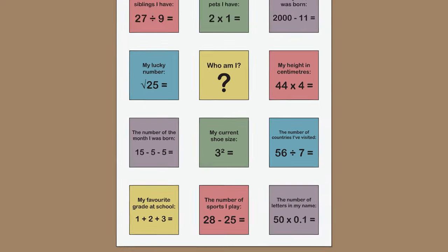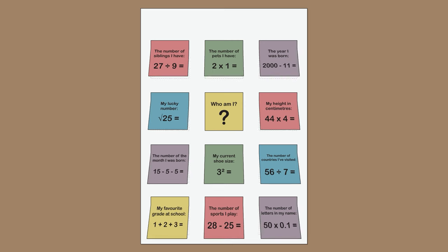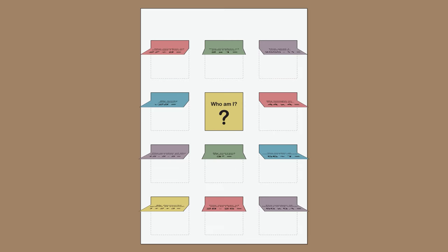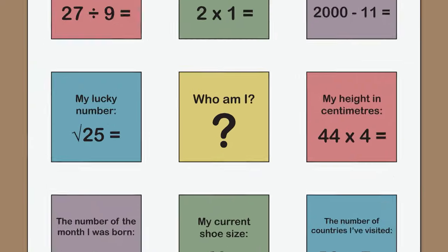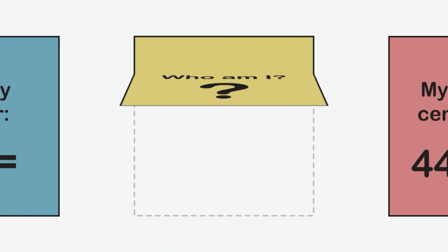Once you've written a clue and a number sentence on each square gently peel back the sticky notes and write the answers underneath in pencil. Underneath the question mark sticky note write your name alongside a little drawing of yourself.